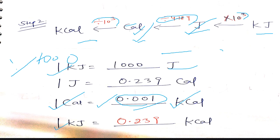Here is the example: 1 kilojoule equals 0.239 kilocalorie. How does this come? We have 1 kilojoule, so we multiply by 1000 to get Joules, then divide by 4.184 to get calories, then divide by 1000 to get kilocalories. So the answer is 0.239 kilocalorie.